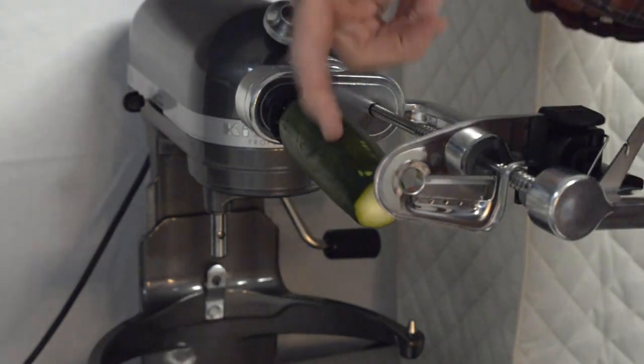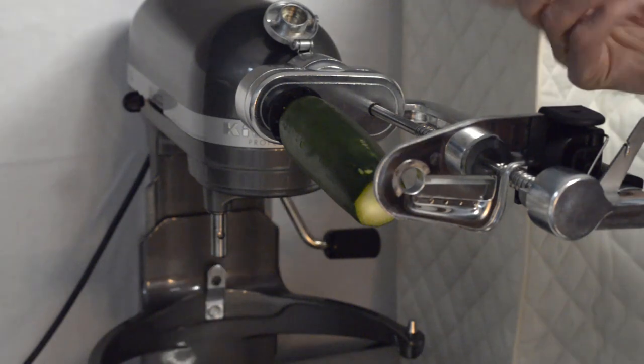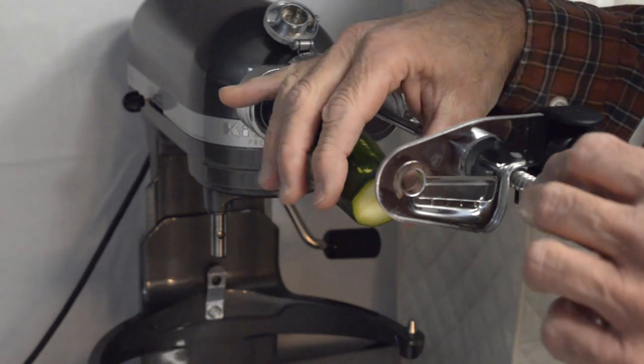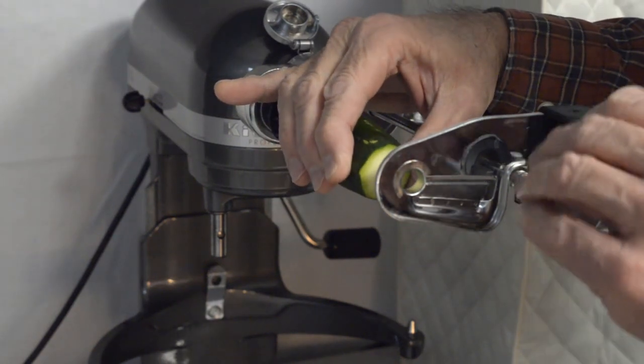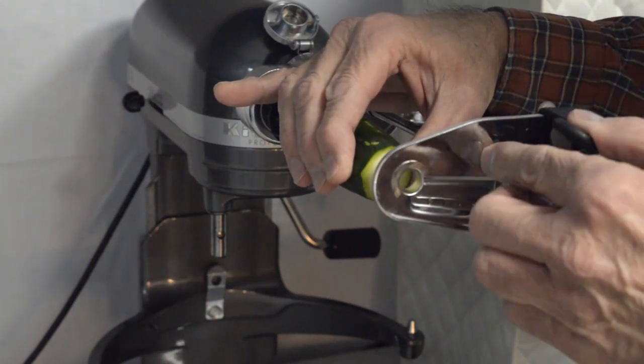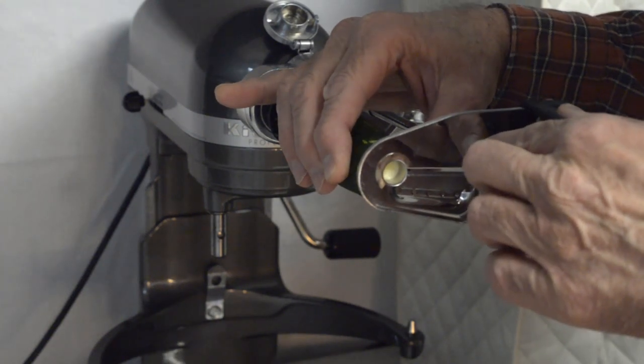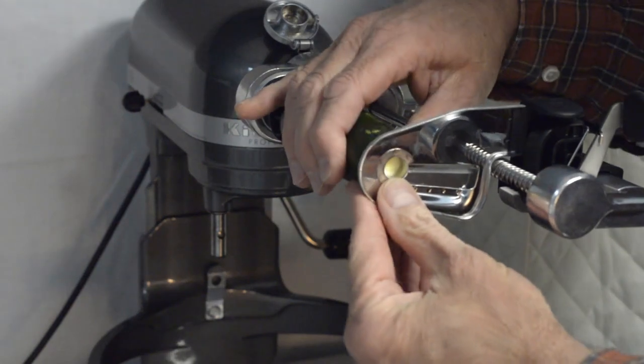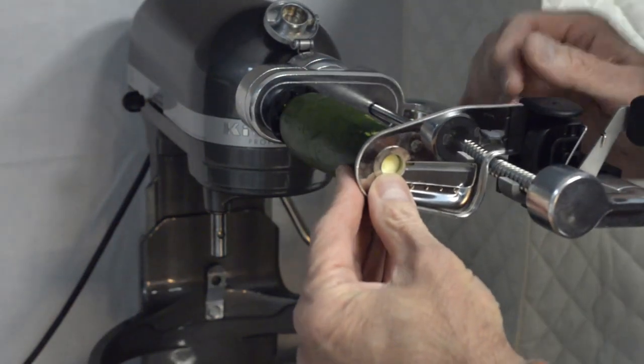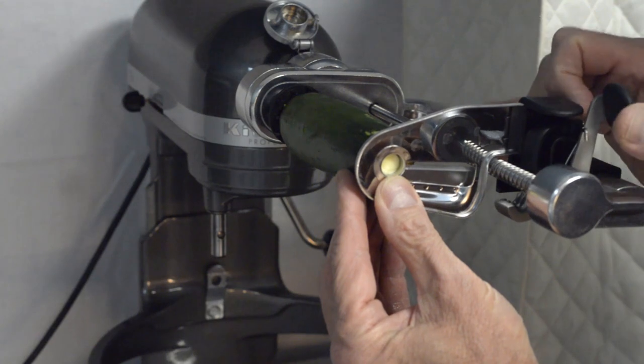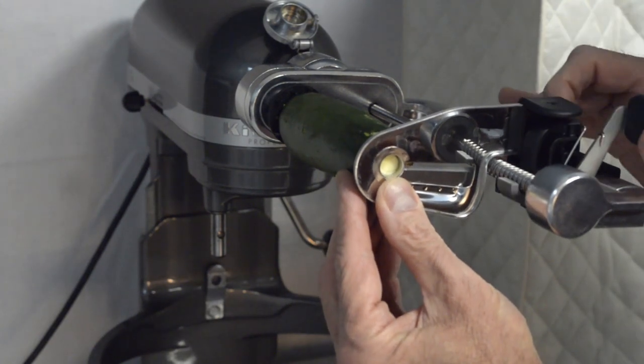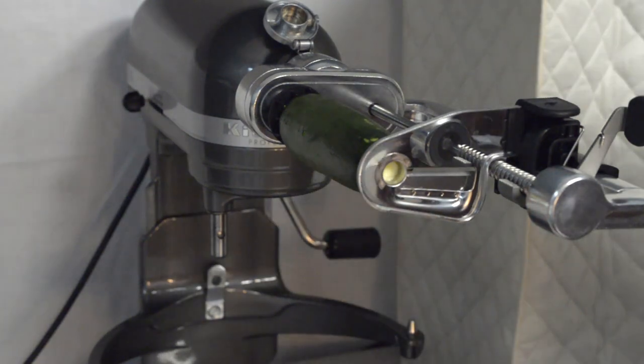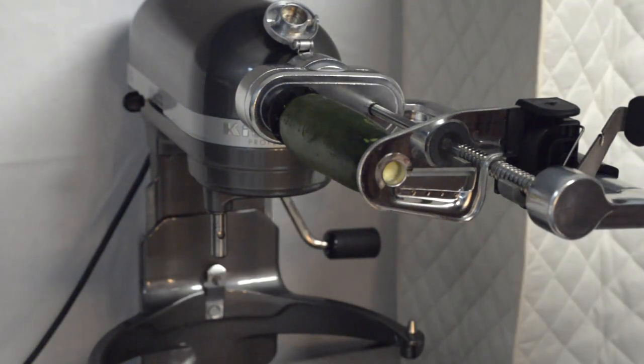Now you can see the zucchini is pointing down. So we need to attach the zucchini to this end. And what I do is I just lift it up, pull the lever, push this forward until this is as close as we can get to the center.